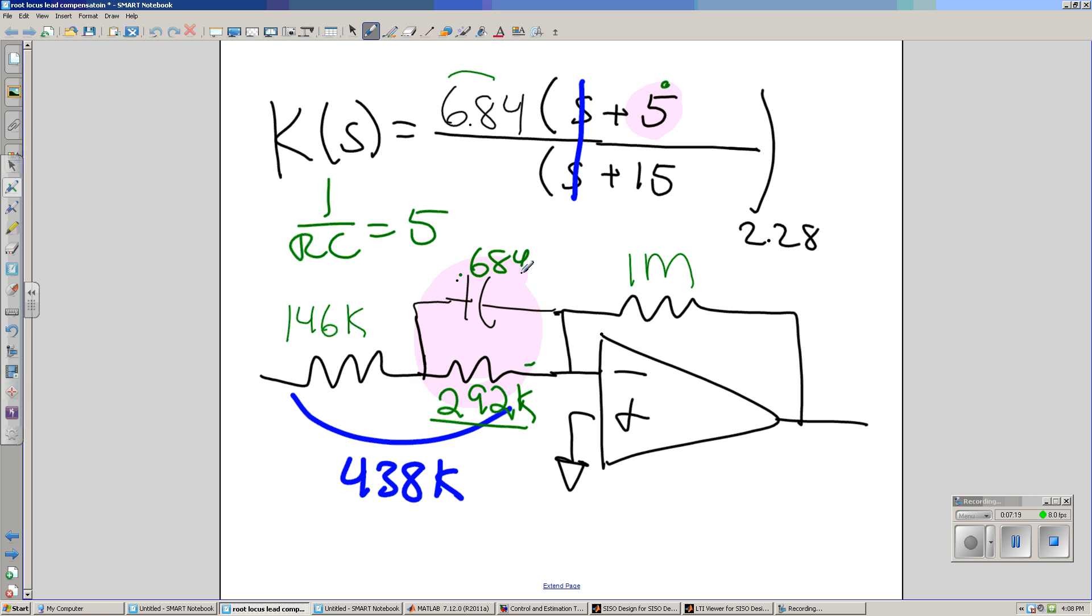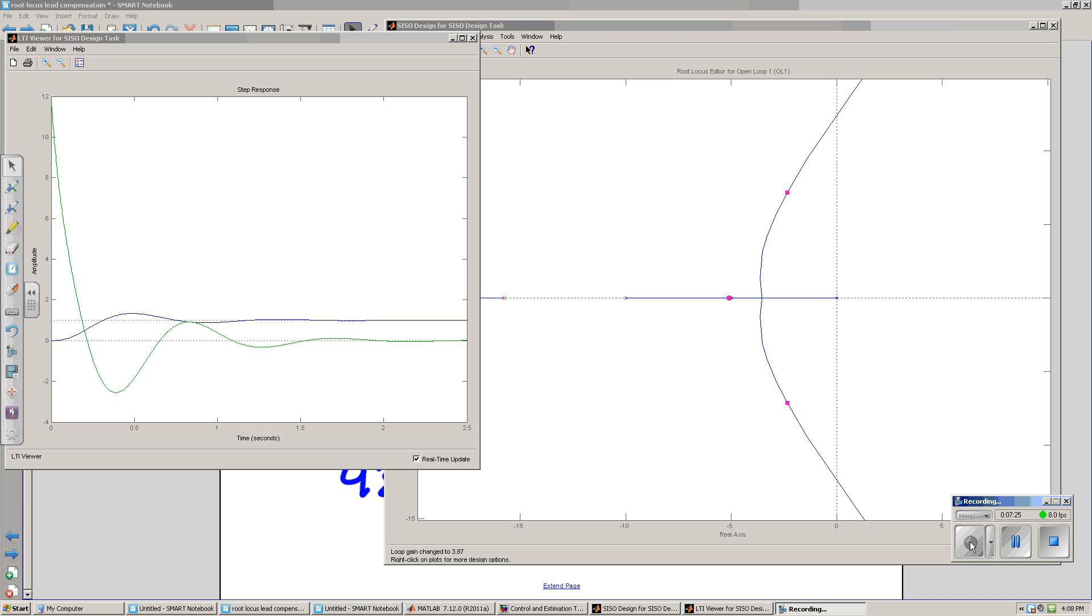Giving you C is 0.684 µF. And you've got your lead compensator. With the results as follows. The system is faster, which is the purpose of a lead compensator, speed up the system.